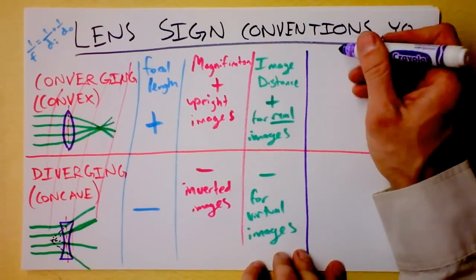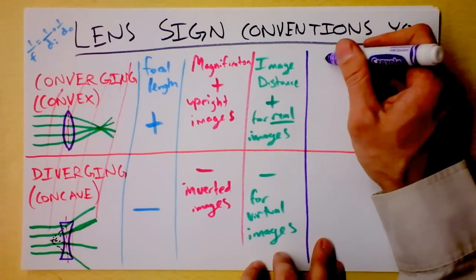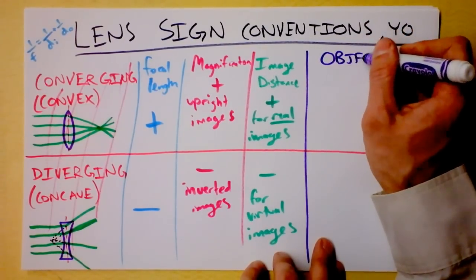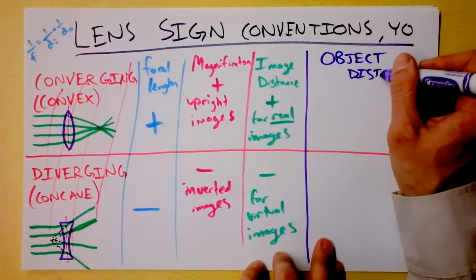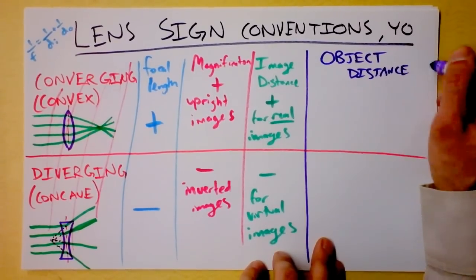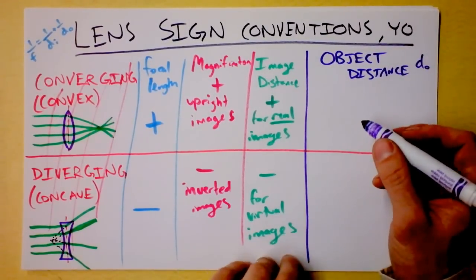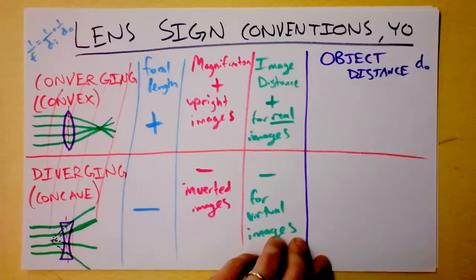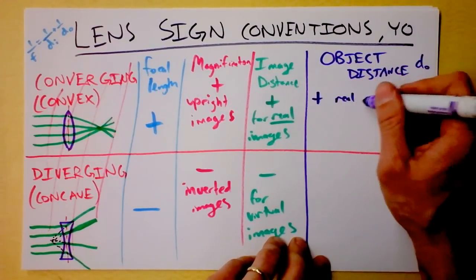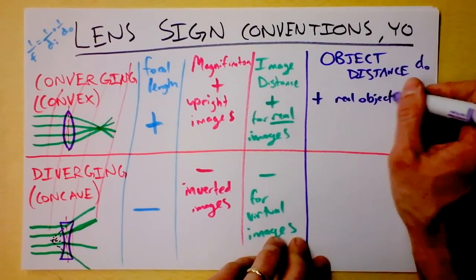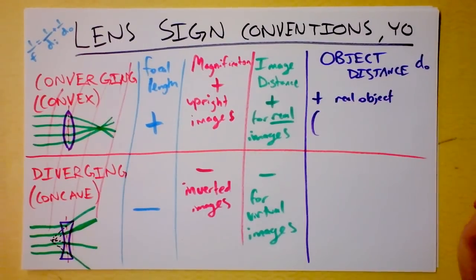And believe it or not, we can even have a negative object distance. And this is probably the coolest thing. Object distance. Well, we can get the object to be negative in the following case. If we have a real object, it'll be positive. And I have to define a real object because we haven't seen anything where there's a virtual object.